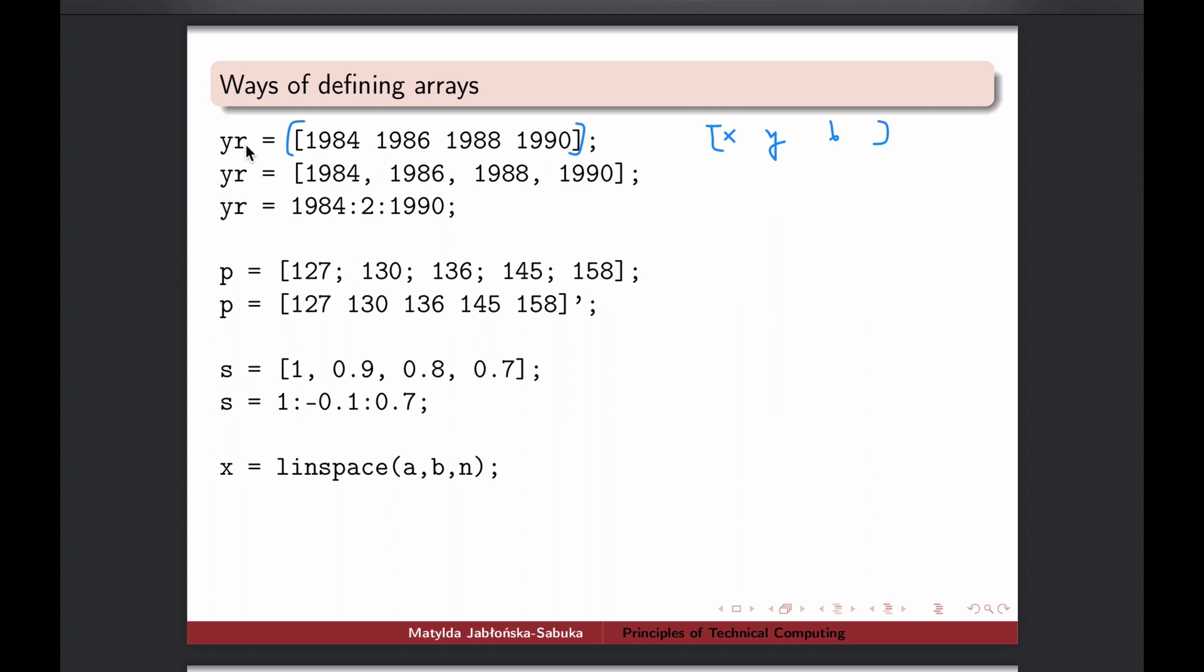For instance, if I want to create an array of the set of years 1984, 86, 88 and 90, I just enclose it in square brackets and I can separate them with spaces. That's sufficient information for MATLAB to know that you're creating separate array elements. Or you can include commas or comma and space. These two lines create exactly the same thing.